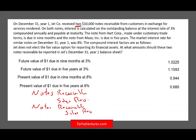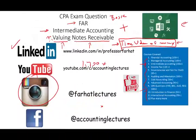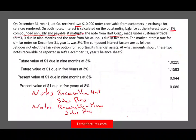On both notes, interest is calculated on the outstanding balance at a rate of 3% compounded annually, payable at maturity. The note from Heart is due in nine months, and the note from Max is due in five years. The market interest rate for similar notes in year one was 8%. Compound interest rate factors are provided.